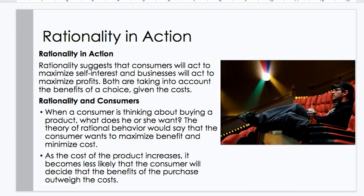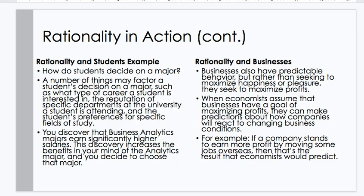Rationality suggests that consumers will act to maximize self-interest, and businesses will act to maximize profits — both taking into account the benefits of a choice given the costs. When a consumer is thinking about buying a product, the theory of rational behavior says the consumer wants to maximize benefit and minimize cost. As the cost of the product increases, it becomes less likely that the consumer will decide the benefits outweigh the cost. For example, how does a student decide on a major? Factors include career interest, departmental reputation, and field preferences. If you discover that business analytics majors earn significantly higher salaries, that increases the perceived benefits of that major, and you decide to choose it.